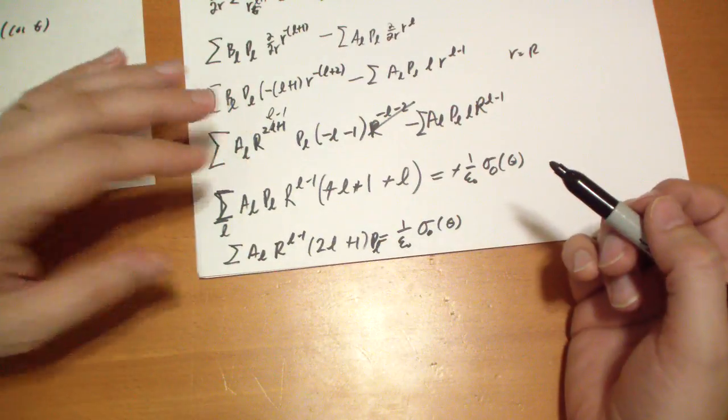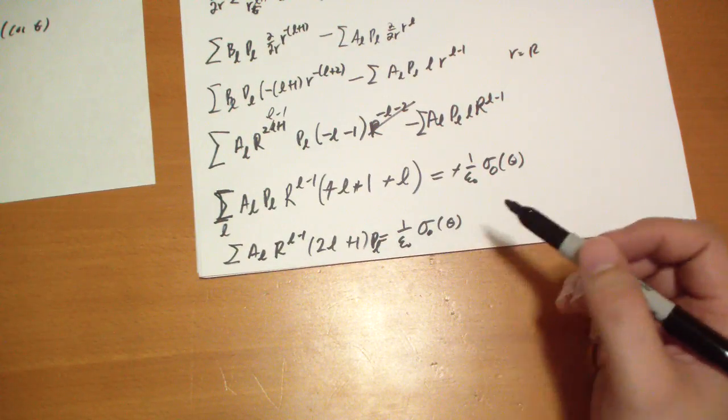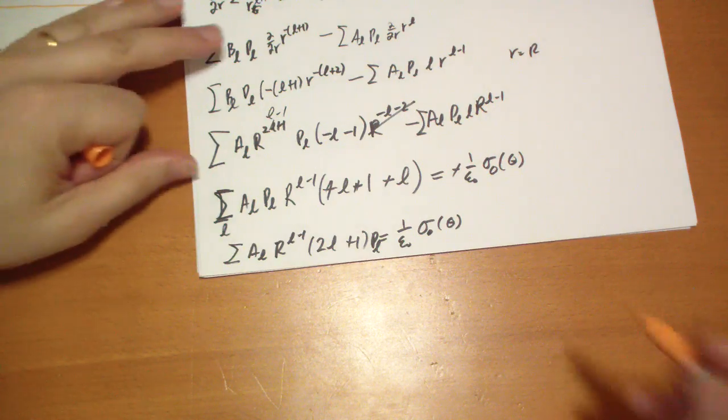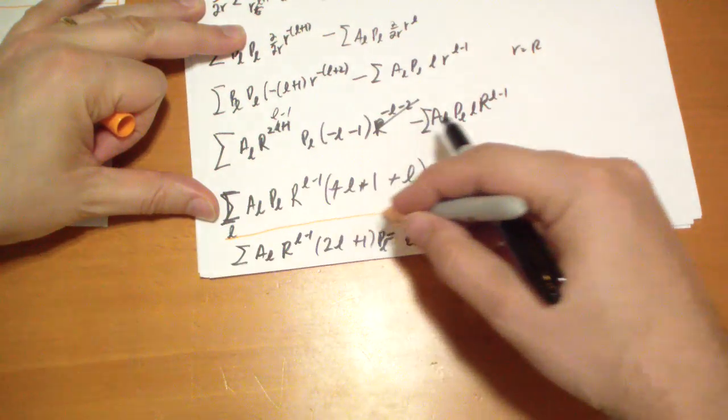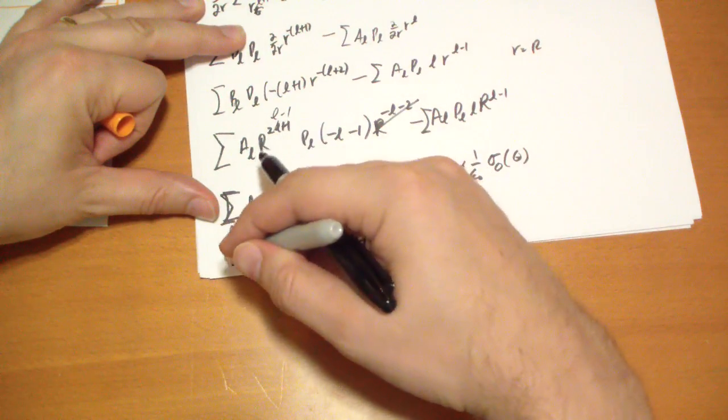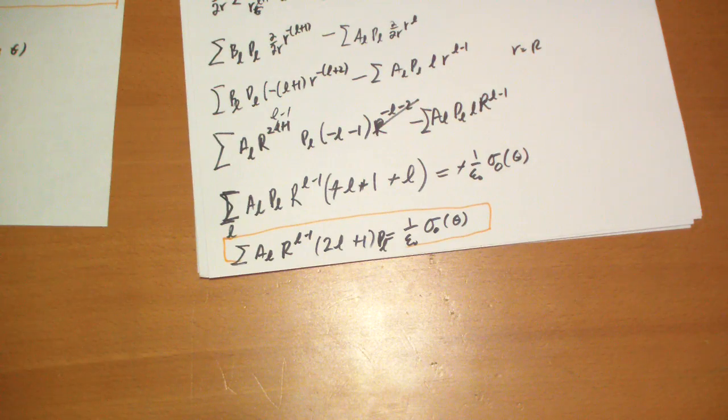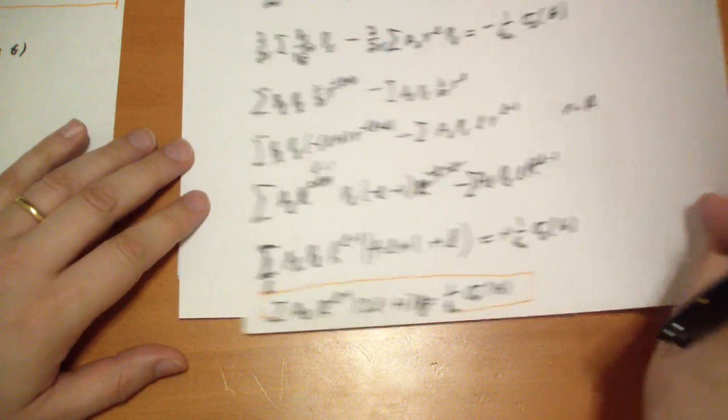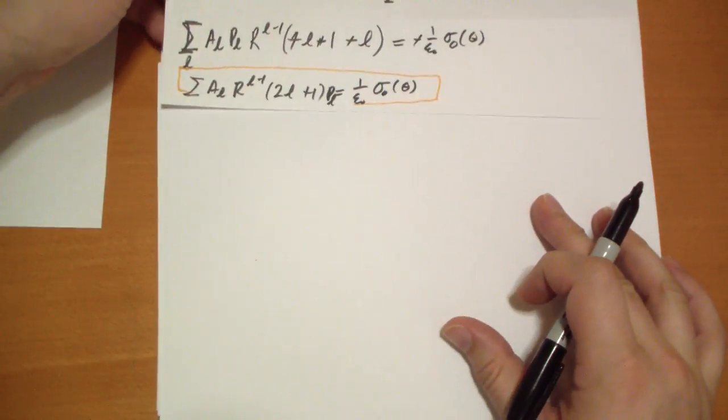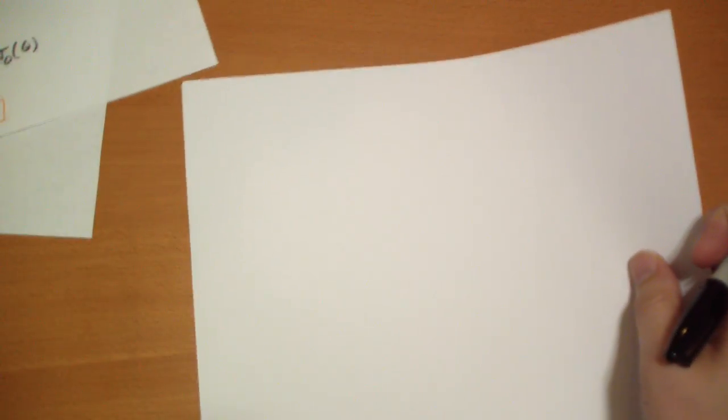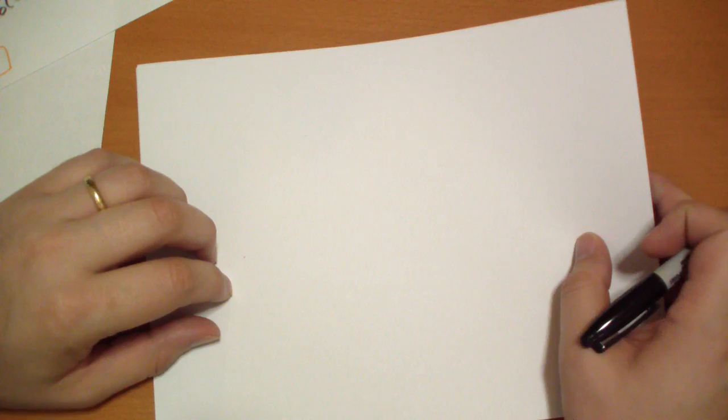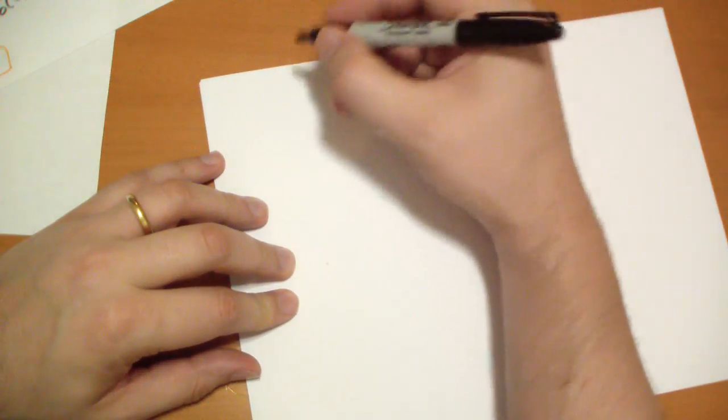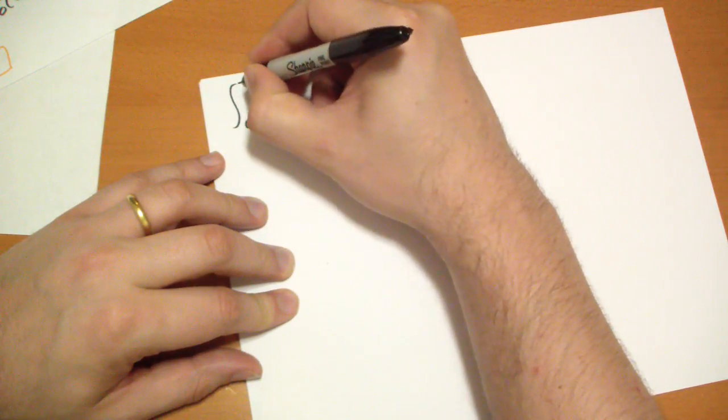So we get, to write this out really neatly, A_L*R^(L-1) and this is 2L+1 is equal to one over epsilon-naught sigma-naught of theta. And we have a P_L as well. At this point, we can do the Fourier's trick for the Legendre polynomials. I'm going to kind of square this one, it's an important result.